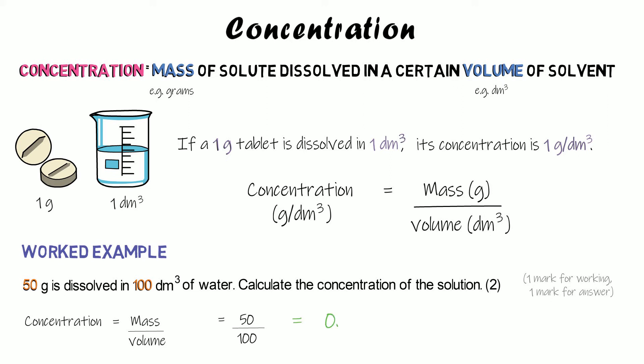That gives us a concentration of 0.5. Because our mass is in grams and we've divided by volume in decimetres cubed, our units are grams per decimetre cubed. So our concentration is 0.5 grams per decimetre cubed. You may get an extra mark in the exam if you have to work out the units.